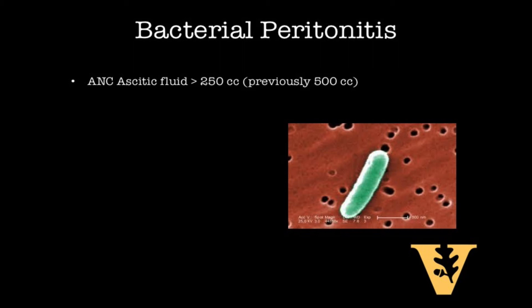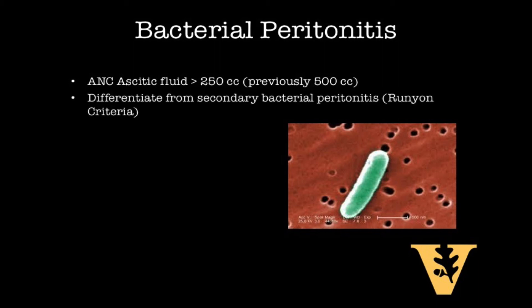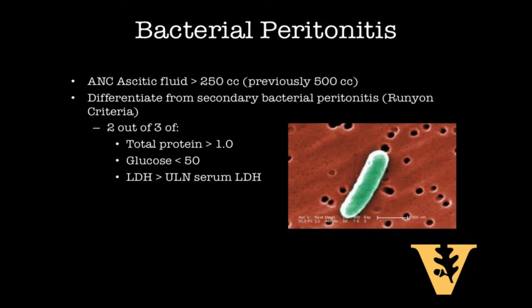Secondary bacterial peritonitis is an infection of the ascitic fluid from a separate intra-abdominal infection. One of the key ways to determine if you might have secondary bacterial peritonitis is to use Runyon's criteria, which requires fulfilling at least two out of the following three values: one, total protein greater than 1.0; two, glucose less than 50; and three, LDH greater than the upper limit of normal for the serum LDH. Additional findings supporting secondary bacterial peritonitis include culturing of polymicrobial flora, isolation of anaerobes, enterococci, or fungi, a very high number of neutrophilic leukocytes in the peritoneal effusion, and refractoriness to initial antibiotic treatment.